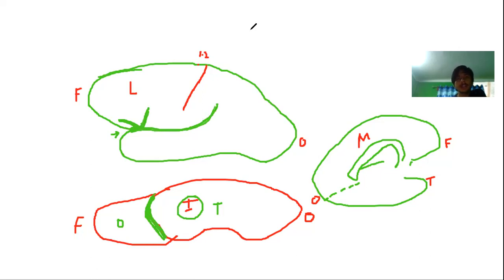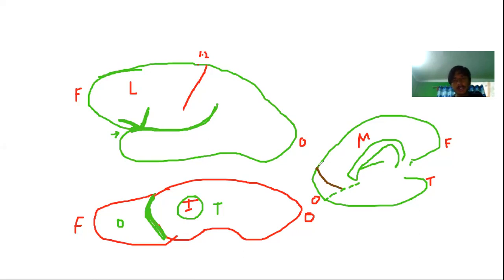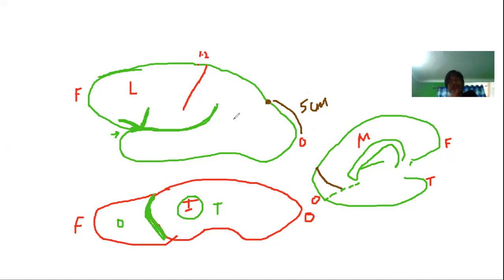From the sylvian point, the lateral sulcus divides: one ramus runs horizontally forward as the anterior horizontal rami, one runs vertically upward as the anterior ascending rami, and one runs posteriorly as the posterior rami of lateral sulcus. The parieto-occipital sulcus begins from the midpoint of the calcarine sulcus and reaches the superior medial border, five centimeters in front of the occipital pole.